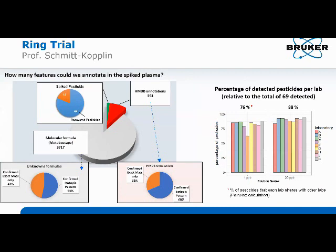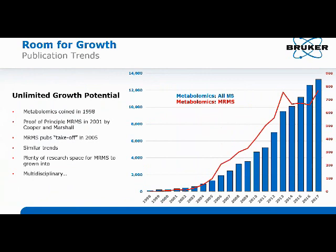The role of MRMS within metabolomics has unlimited potential for growth. Going back to when metabolomics was coined in 1998, there was a proof-of-principle article in 2001 by Alan Marshall and Cooper that kicked things off. MRMS publications in metabolomics really started taking off in 2005, following the same trend as mass spec in metabolomics. Last year there were almost 13,000 mass spec publications in metabolomics, while MRMS in metabolomics had about 800 — same trend but much fewer, leaving lots of room for growth.